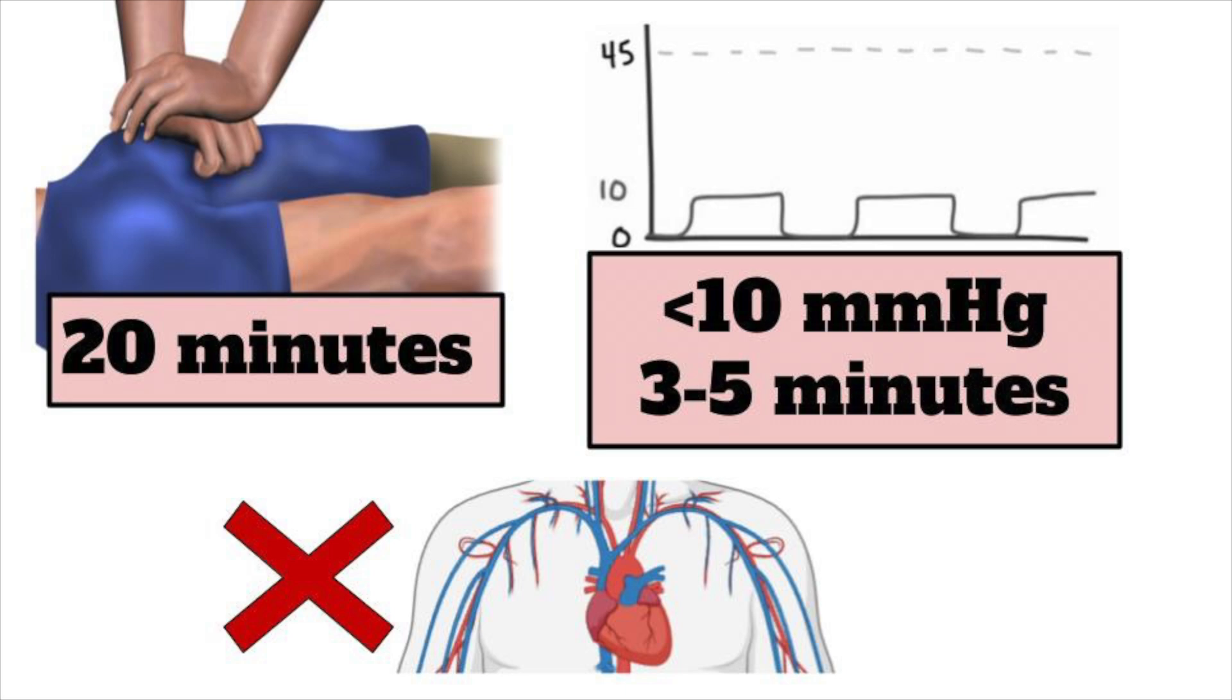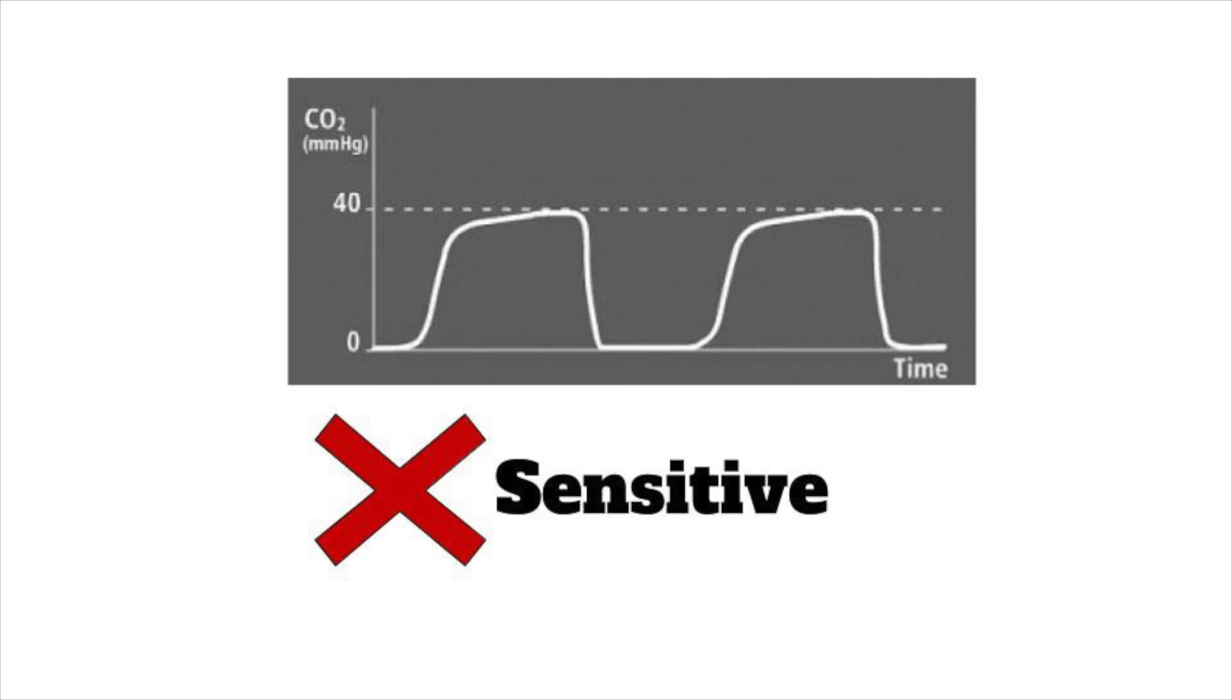And the reason it's controversial is because calling the code is a lot more complicated as outlined by Weingart in our latest cardiac arrest main episode. End-tidal CO2 just isn't sensitive enough, so it should be only used as an adjunctive data point in decisions of termination of the code.